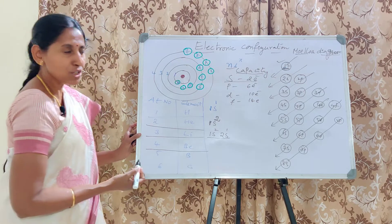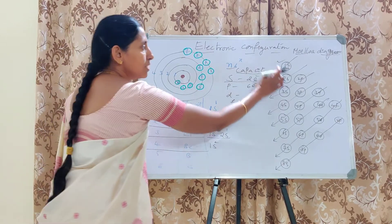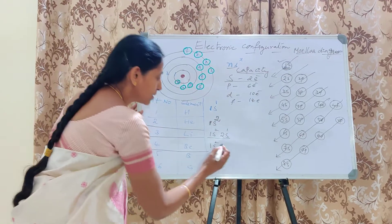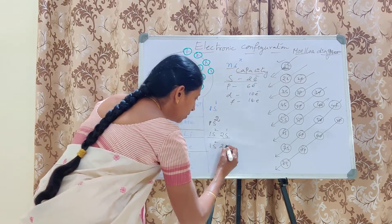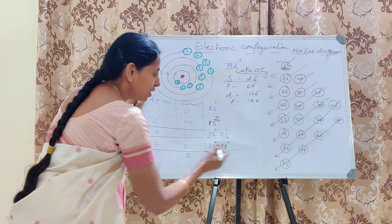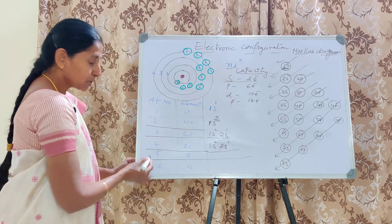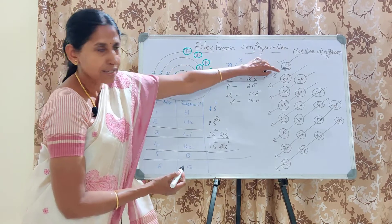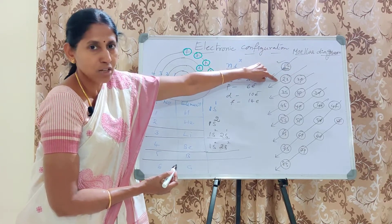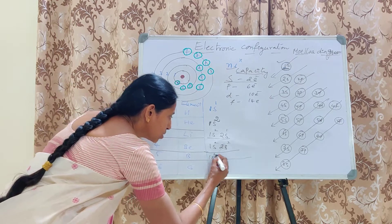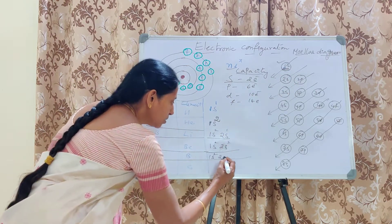Next, Beryllium: the first two electrons go to 1S² as usual, and two more electrons remain. Since 1S is complete, the remaining electrons go to 2S. S has a capacity of 2, so next two electrons go to 2S, giving the configuration 1S² 2S².